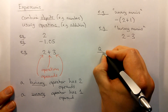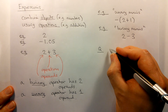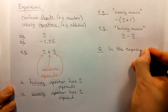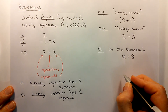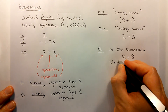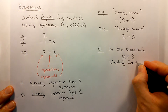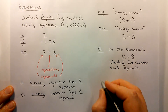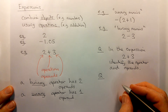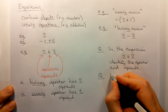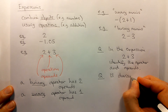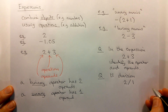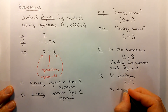So let's pose some questions to check whether we've understood what happened so far. In the expression 2 plus 3, identify the operator and operands. And another question: is division in the form as shown here, 2 divide 1, a binary or a unary operator?